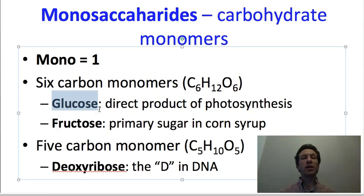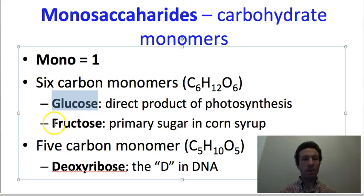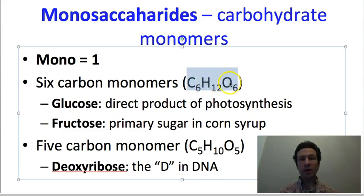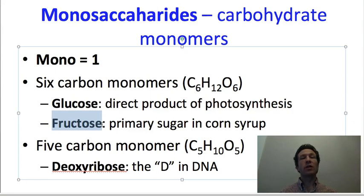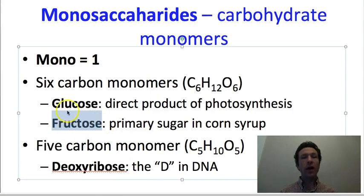Glucose is the most important because it is the direct product of photosynthesis — whenever photosynthesis occurs, glucose is made, and then that glucose can be modified into other things. There's another 6-carbon sugar with the same formula C6H12O6, but the way the atoms are arranged is a little different between them. Fructose is important in human diets because it is an abundant sugar in corn, which is a very cheap crop to grow relative to sugar cane. That means many sweets are sweetened with high fructose corn syrup instead of sugar.